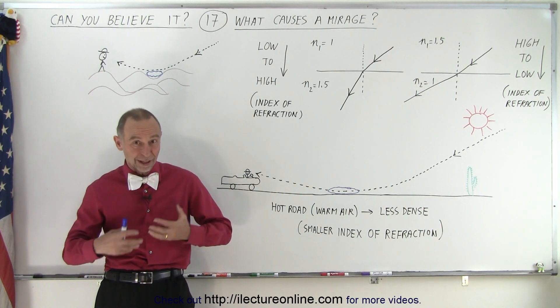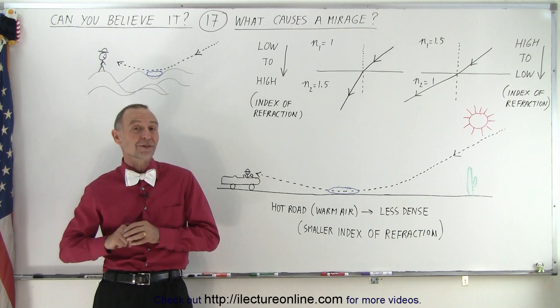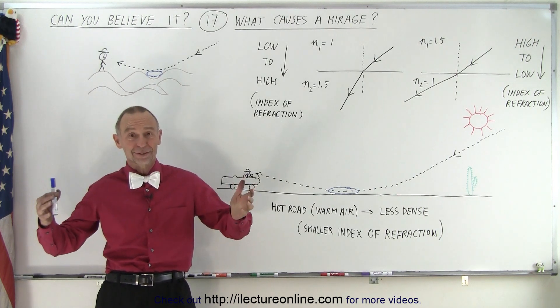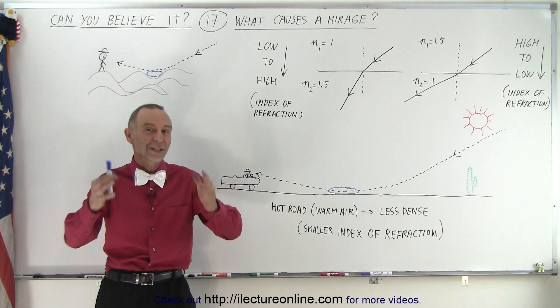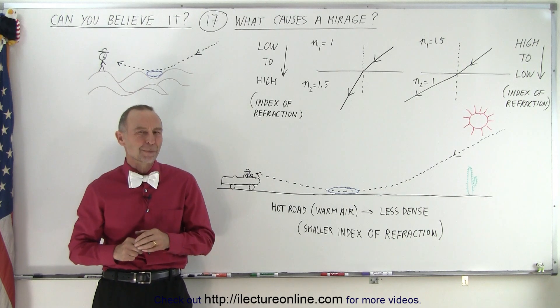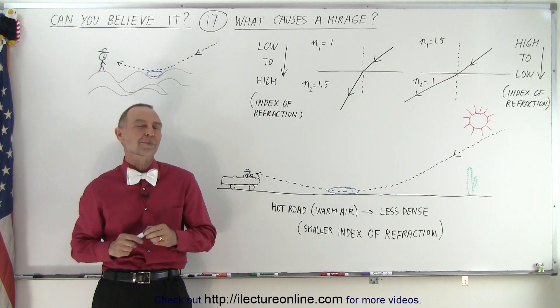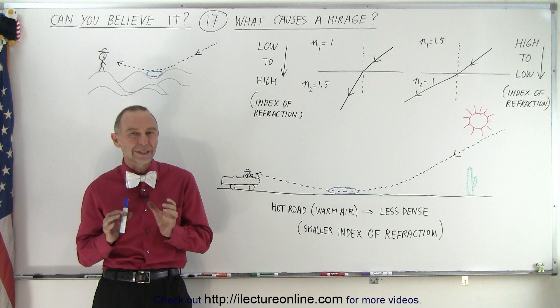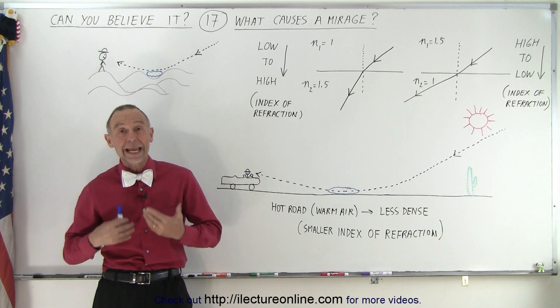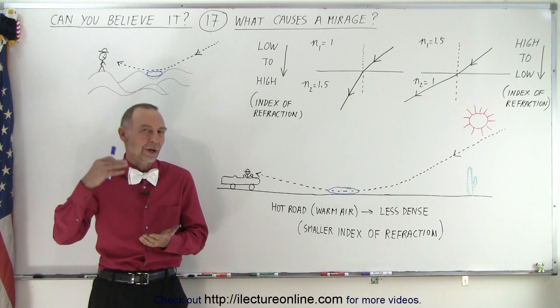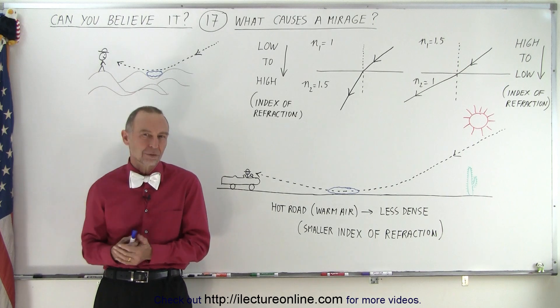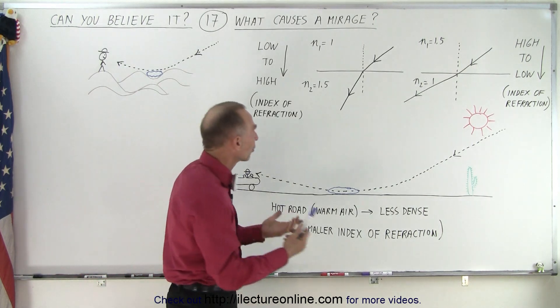Of course, if you're not familiar with the desert and this happens to you, it could be very dangerous. You might just collapse from exhaustion, never reaching that mirage that looks like a lake. But what is it? What causes that mirage? Well, it has to do with the index of refraction and what happens to light when it goes from one index of refraction to another.